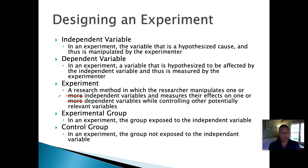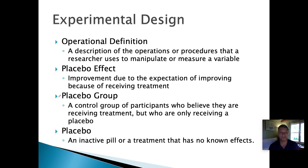The two groups are called the experimental group and the control group. The experimental group is the one exposed to the independent variable — in my example, the group of plants exposed to music. The control group is exactly the same as the experimental group except there's no music. Everything else is the same: the same size pots, the same amount of soil, the same amount of sunlight, the same amount of water — anything else you can think of for growing plants.